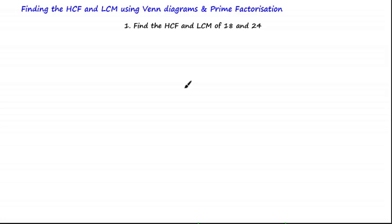Hi guys. In the last tutorial we learned how to calculate the highest common factor and the lowest common multiple by writing the list of factors and multiples of a given set of numbers. In this tutorial we're going to learn how to calculate the highest common factor and the lowest common multiple using Venn diagrams and prime factorization methods.